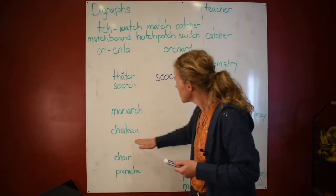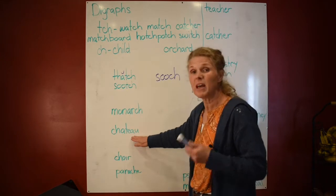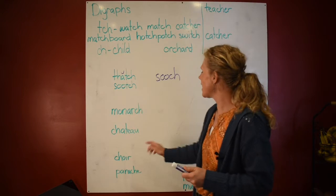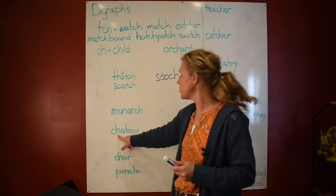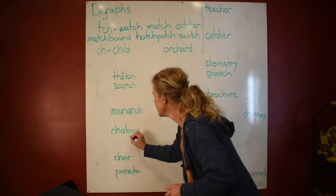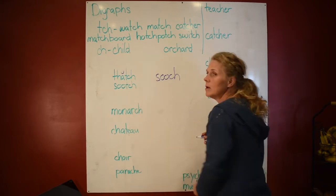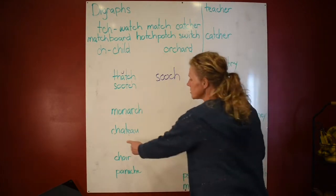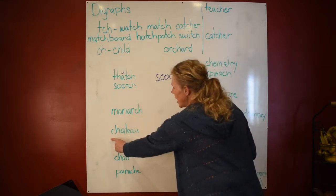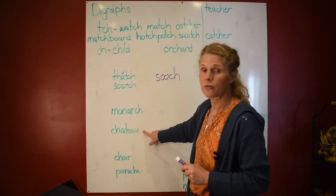Now look at this one. EAU is a vowel team that is French — we talked about that in another lesson — so we don't even have to guess. We know this is going to say 'sh.' We find our consonant in the middle, and one consonant goes to the end: it's going to say 'chateau' — but actually let's move the T over: 'chateau.' That is the correct pronunciation for this French word.